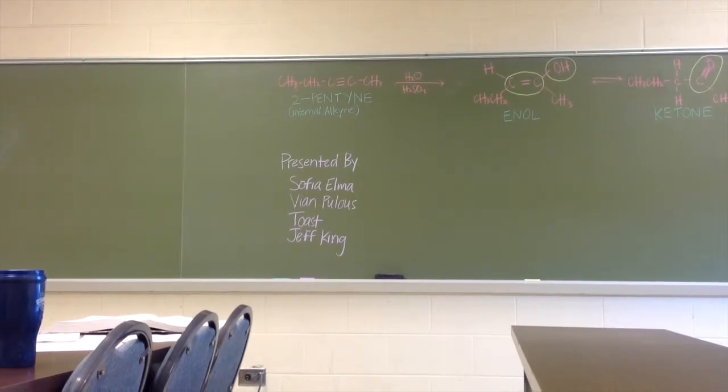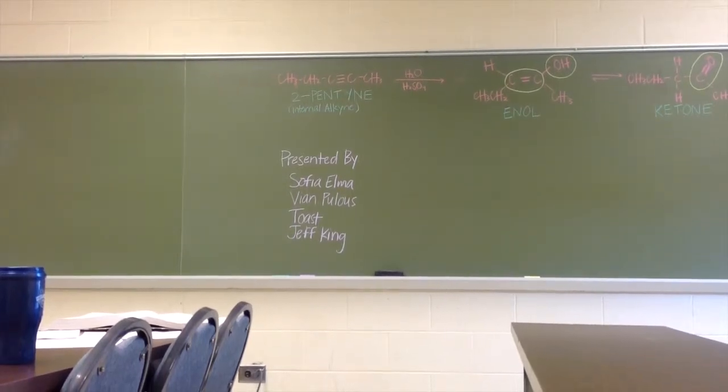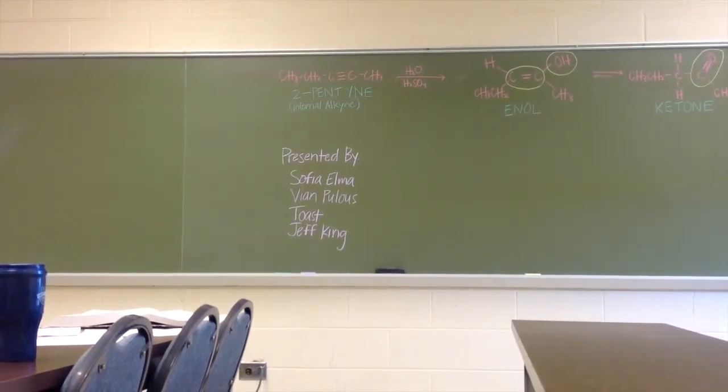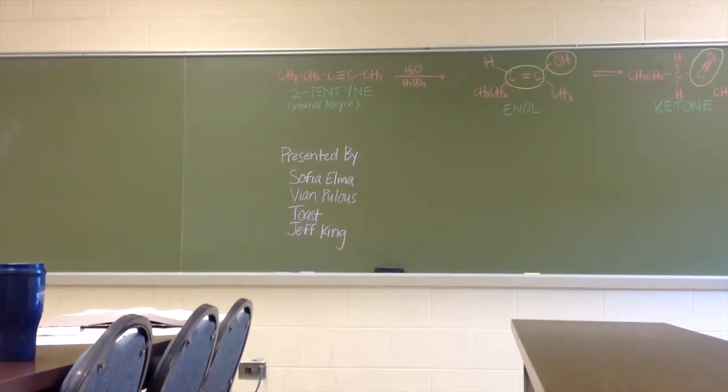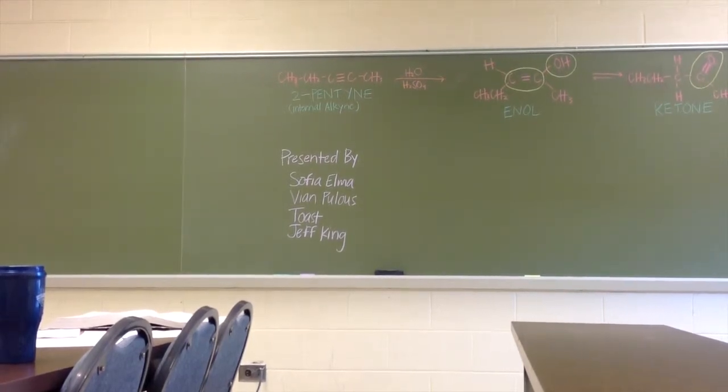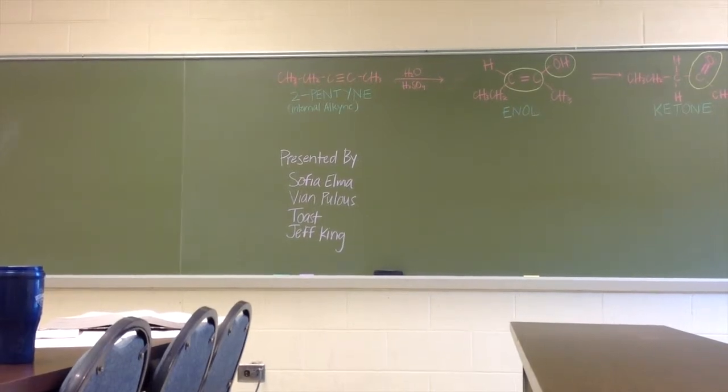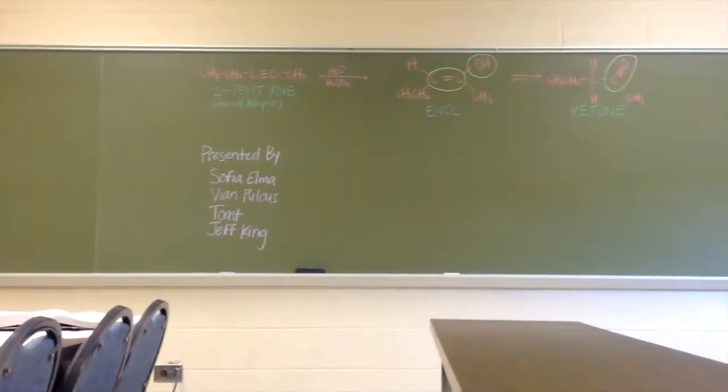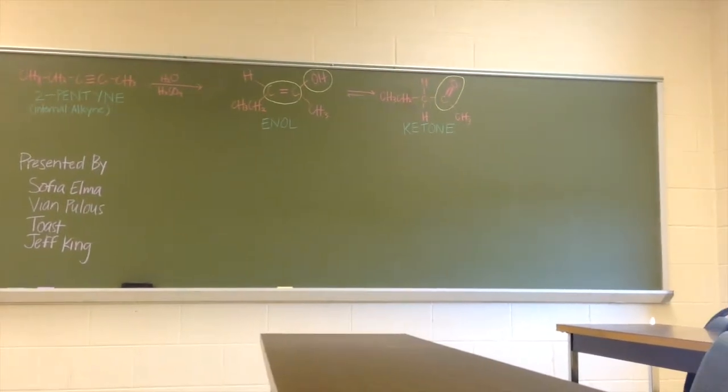If it were a terminal alkyne, we would need the presence of an additional mercury catalyst. 2-pentine is going to react with H2O and H2SO4 to give two tautomers. Tautomers are constitutional isomers that differ in the location of a double bond and hydrogen atoms.